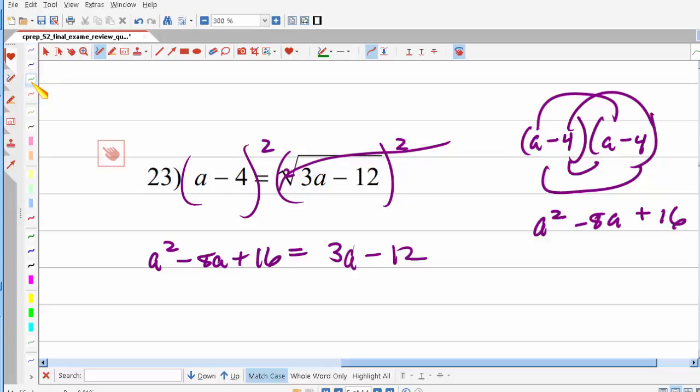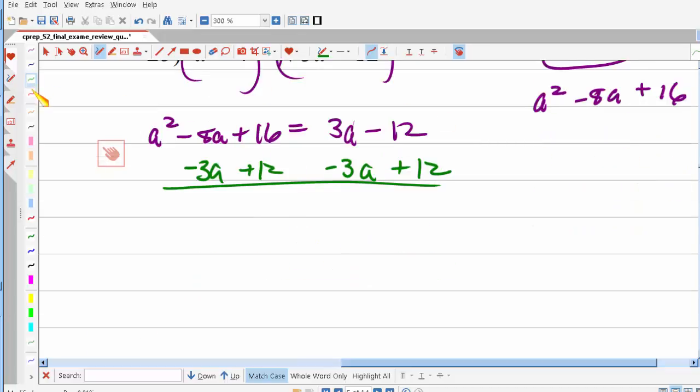Now I have a quadratic equation to solve. I need to get a 0 on the right and all the other terms on the left. So I move the 3a minus 12 over to the left. Combine like terms. I get a squared minus 11a plus 28 equals 0.